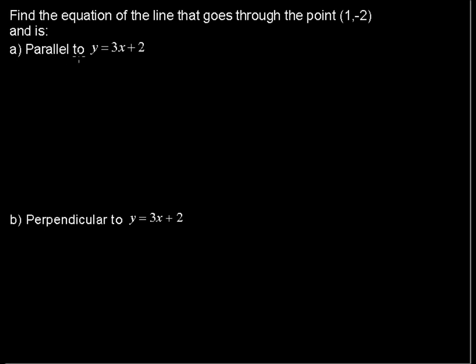First of all, let's pick out the slope right away. The slope of this line is 3, m equals 3. Parallel lines have the same slope. I could say m sub 1 equals m sub 2, or one line that is parallel to another has the same slope.